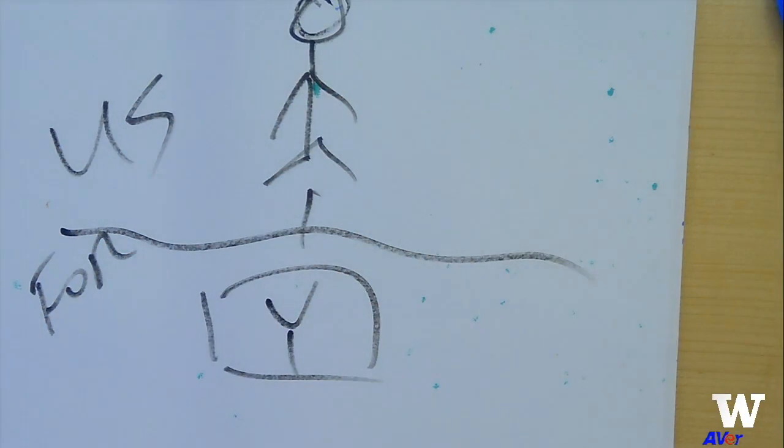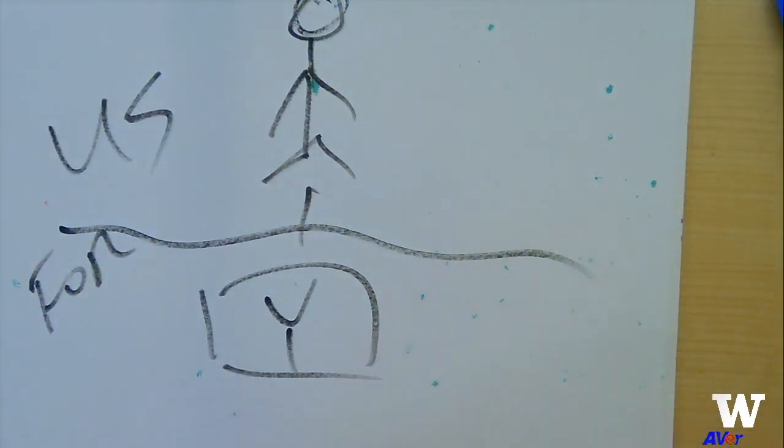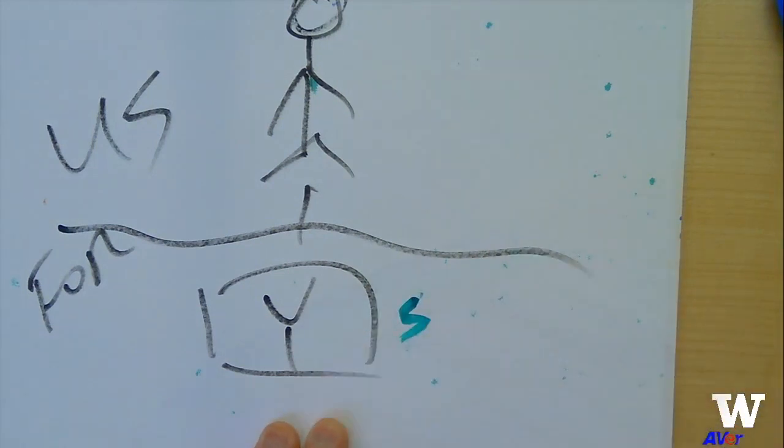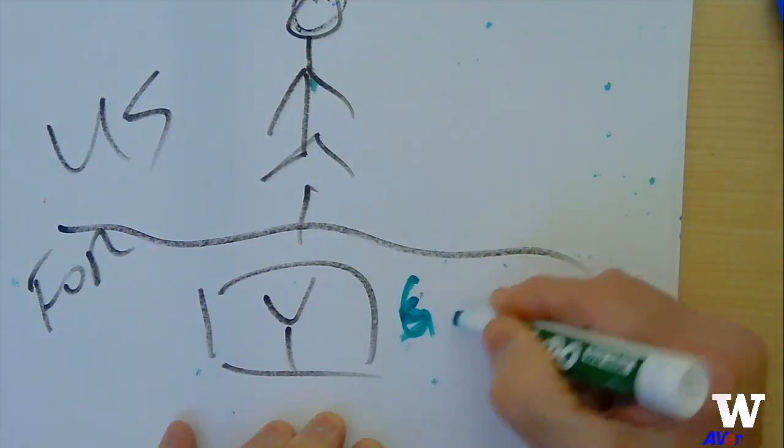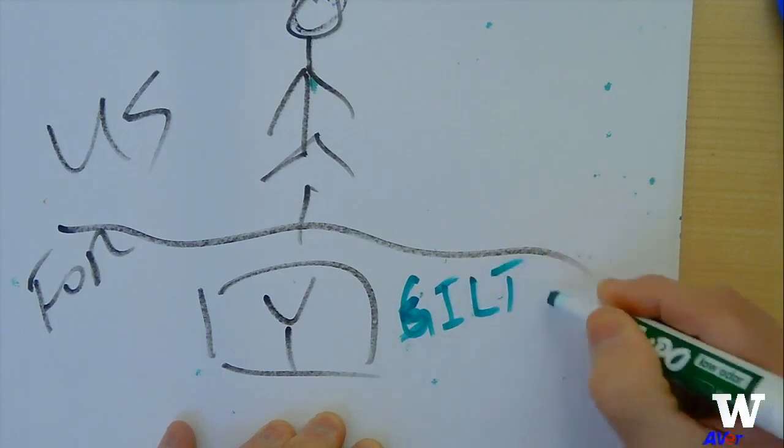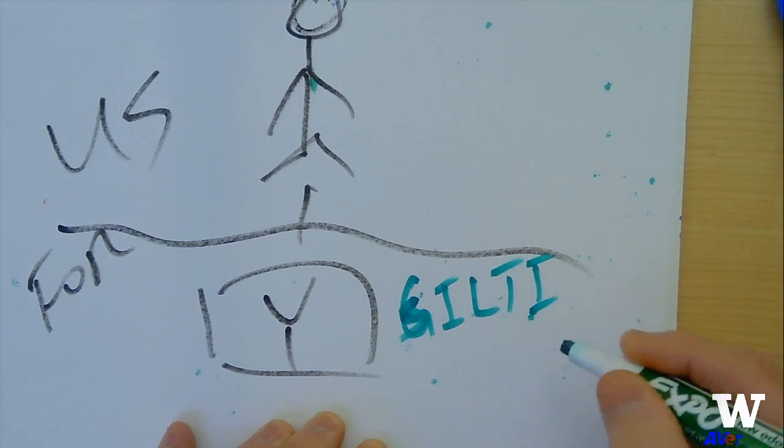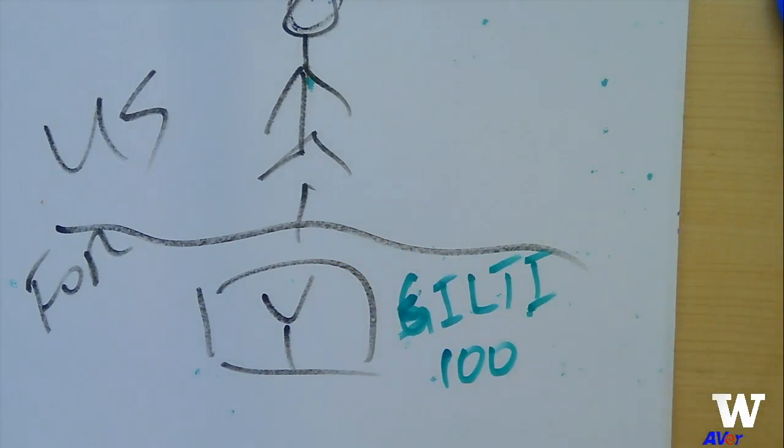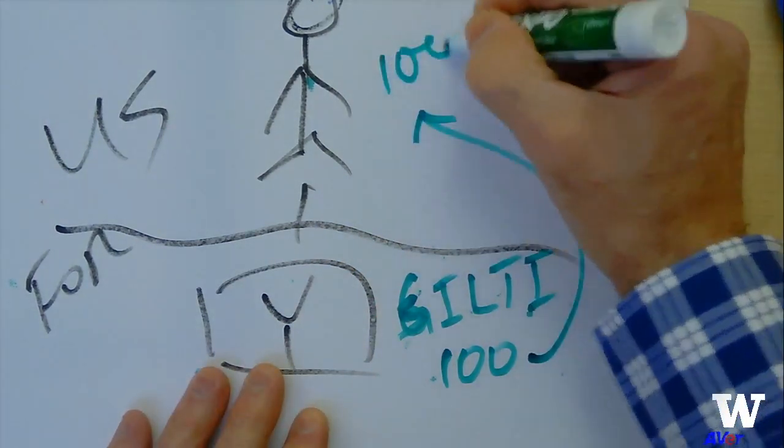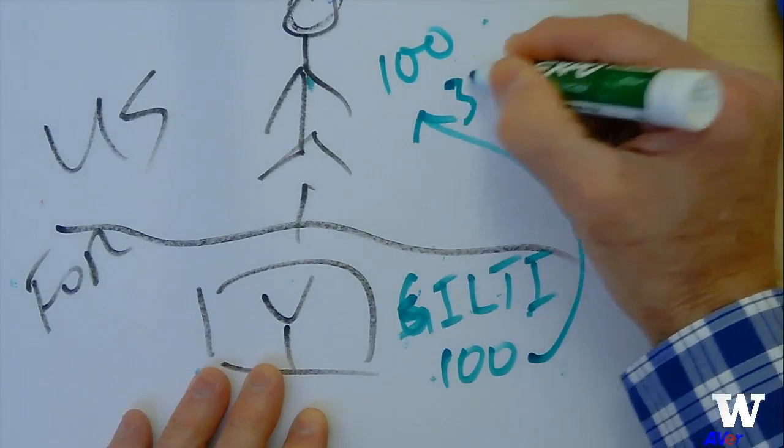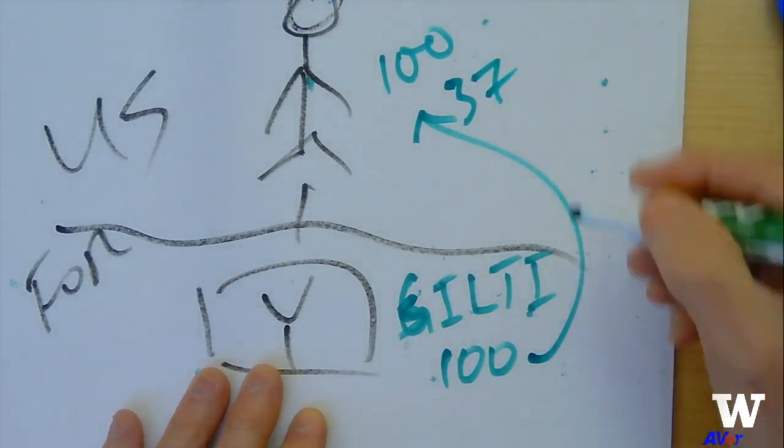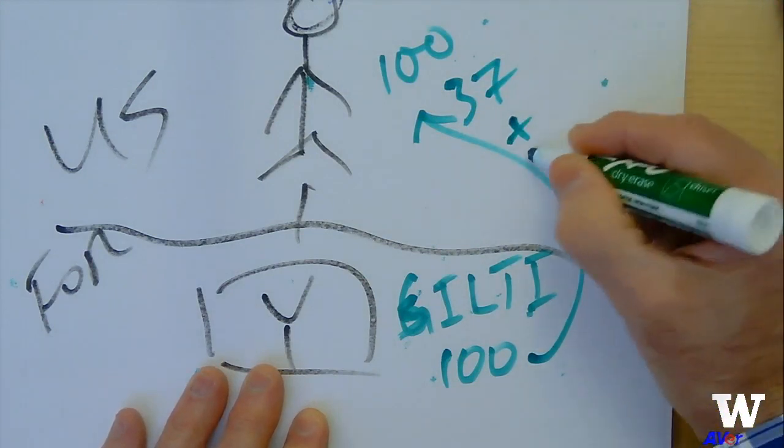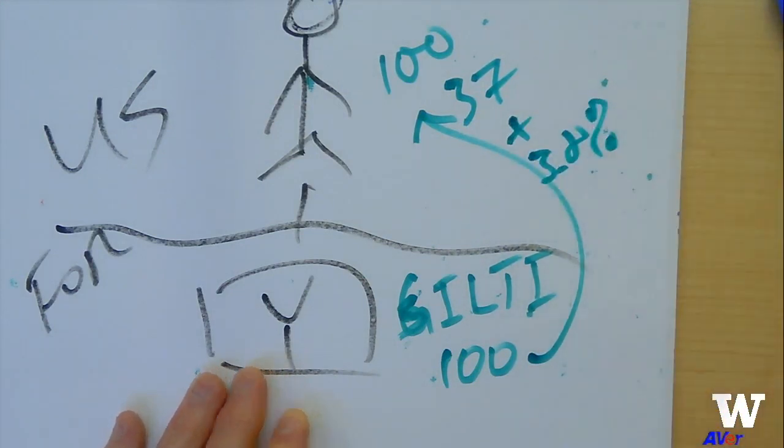And let's say that company Y, of course, has some subpart F income. Or actually, let's make it GILTI rather than subpart F because the results are sort of worse. Let's say it has GILTI of 100, the individual has to recognize that income and pay up to 37% of U.S. tax plus the 3.8% net investment income tax. This is one of these terrible results.